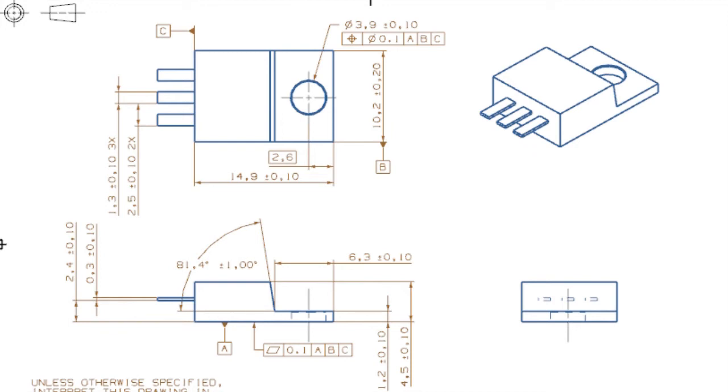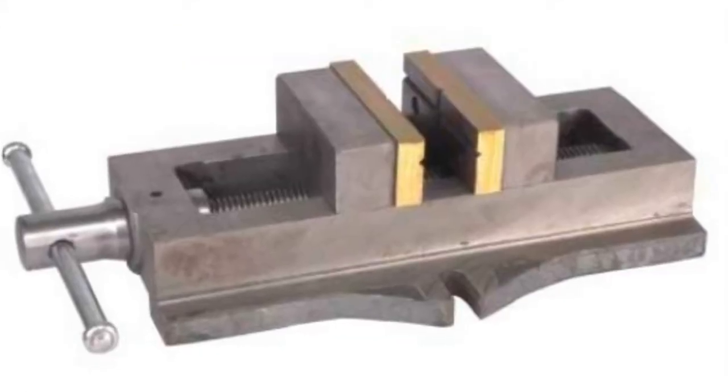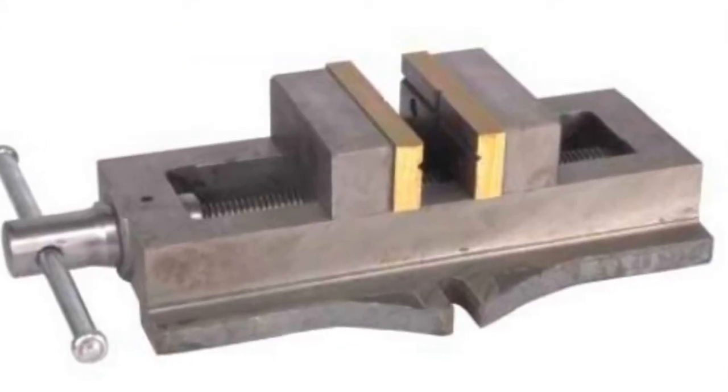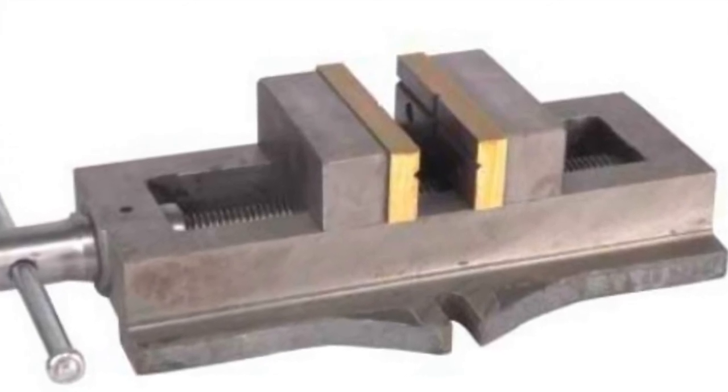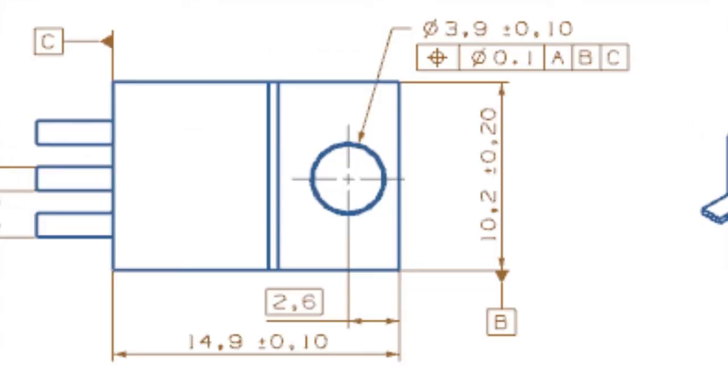Well, you might ask, how can we fixture a part like this symmetrically? Well, here, for example, is a centering vise that could be used to center the part for inspection. It's important how the datum symbol is placed on the drawing to state that it is being attached to the feature of size and not to a feature or a feature surface, we might call it in the CAD world. It should be attached directly across from the dimension.